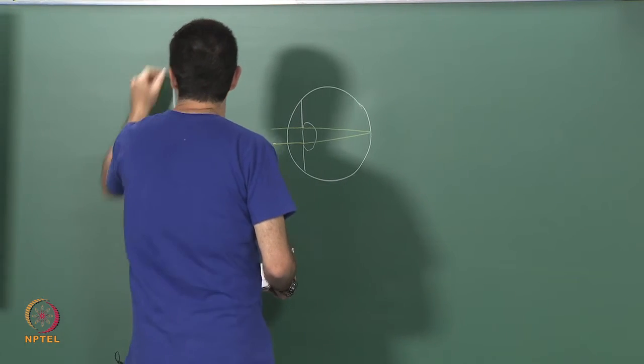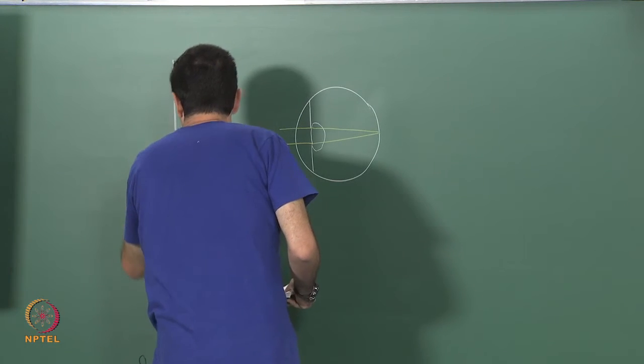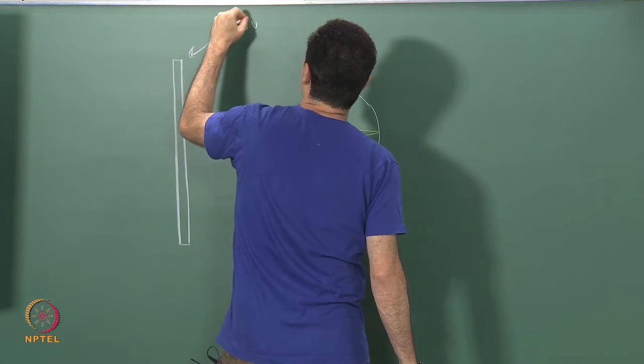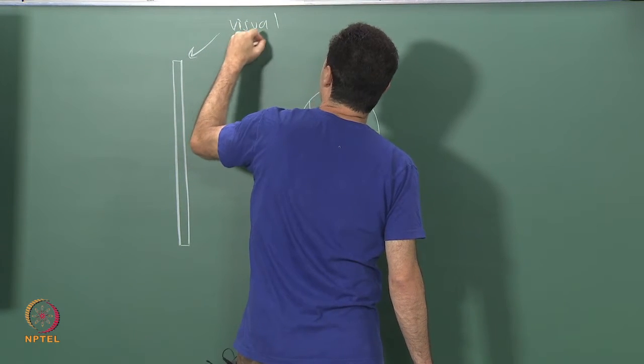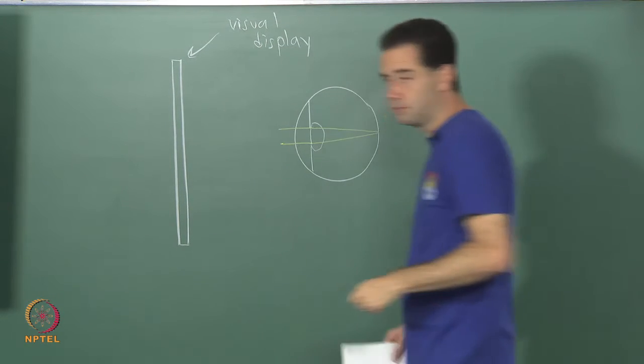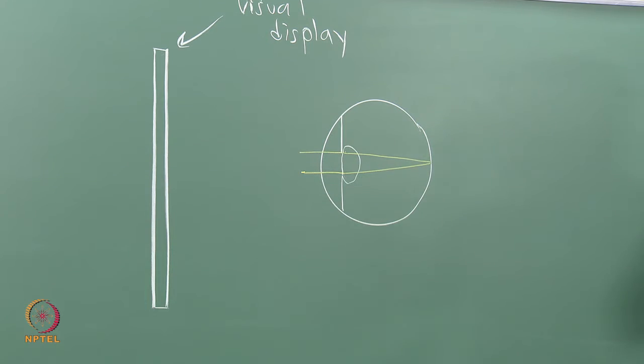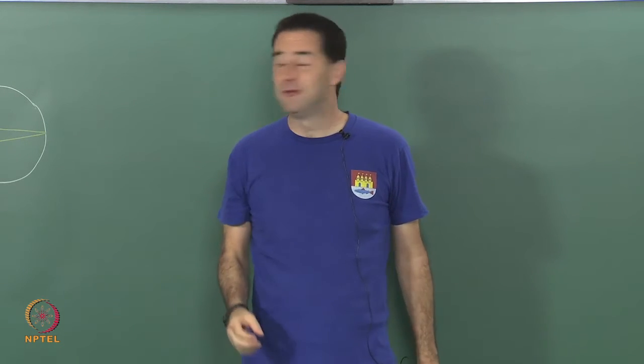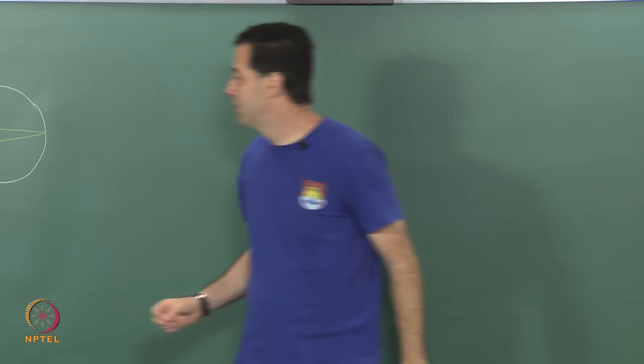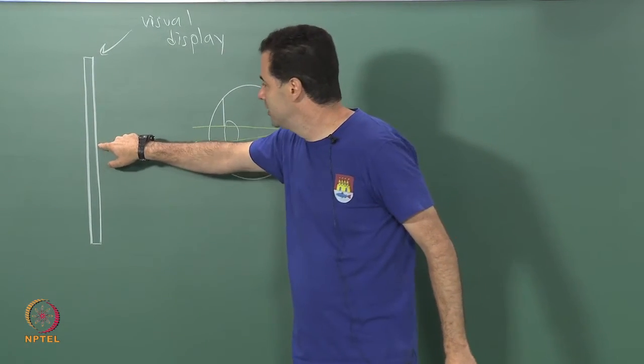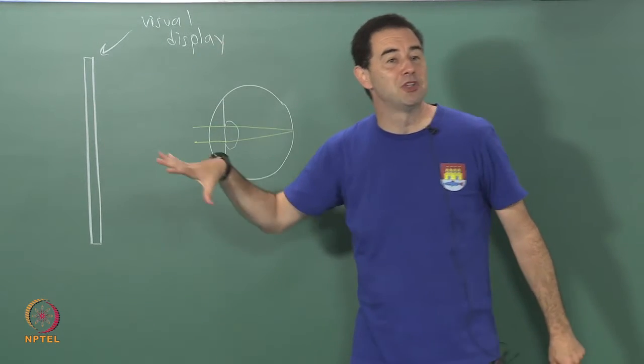We have this, and then I have a display, let's say here, a visual display. If you put a display very close to your eyes, can you focus on it? If it is very close you will not be able to focus, because if you consider each one of these pixels as a point source of light, the rays are going to be very much diverged.